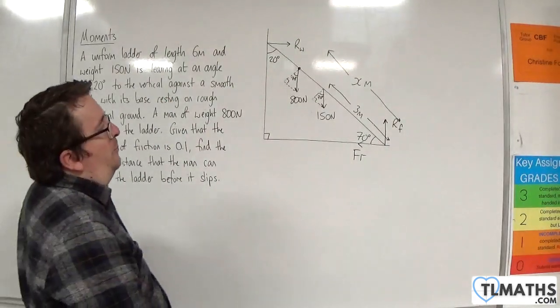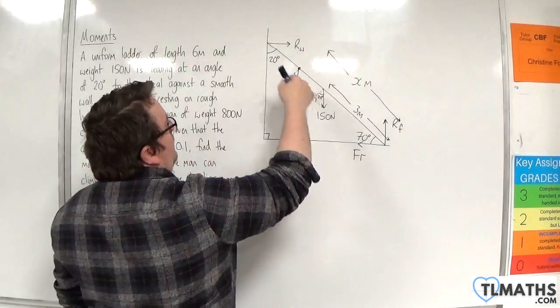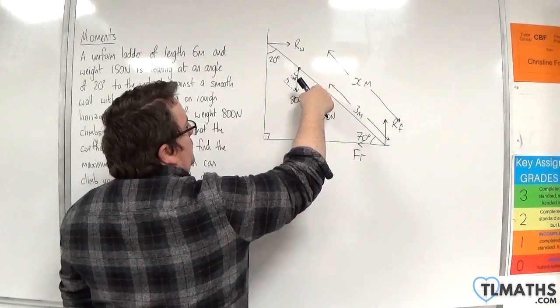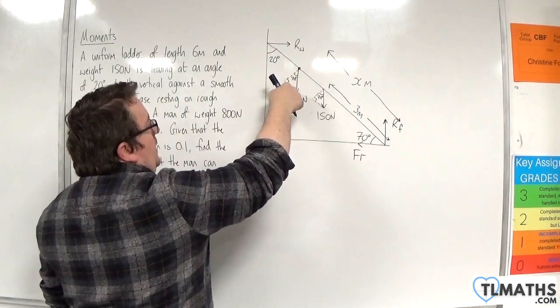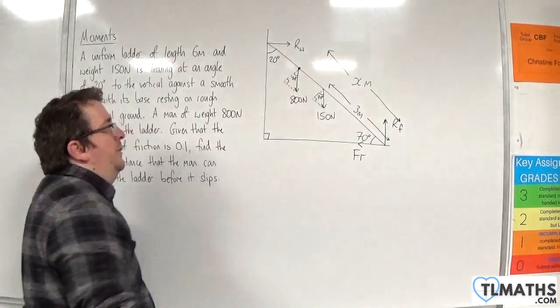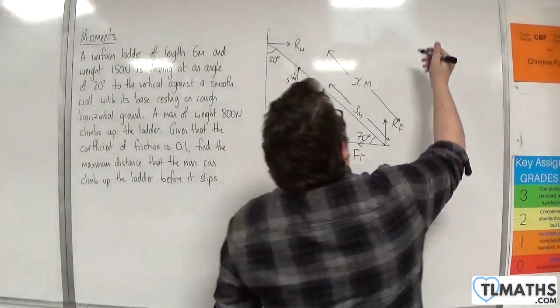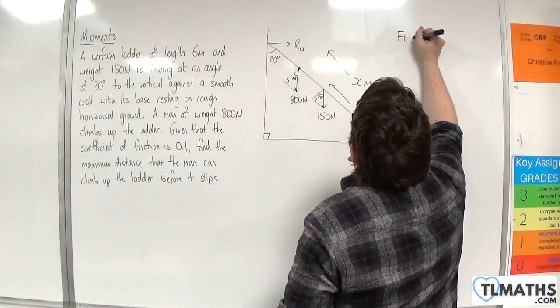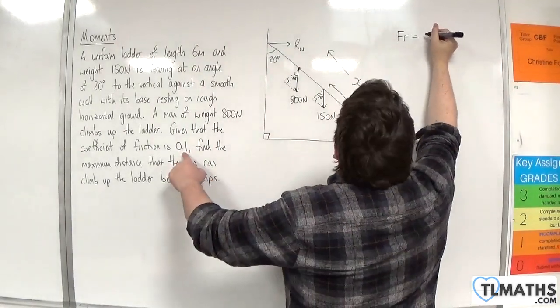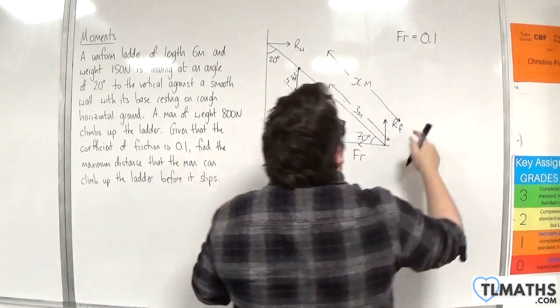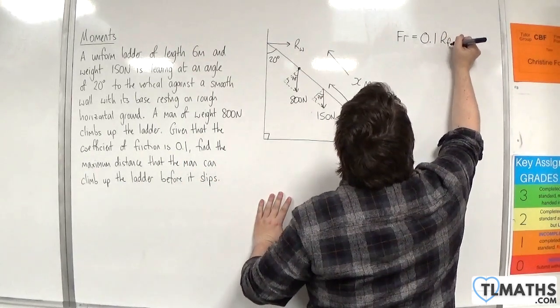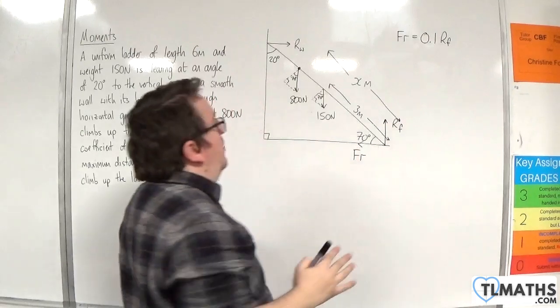So we'll be able to split that up into its components. So 150 sine 70, 150 cosine 70, 800 sine 70, 800 cosine 70. We know that the friction must be equal to mu times R, which is 0.1 times by the normal reaction with the floor, so Rf.